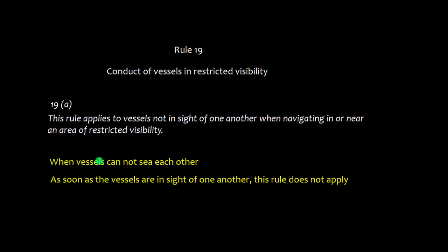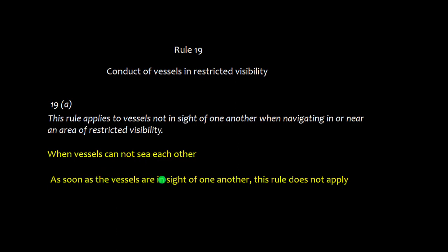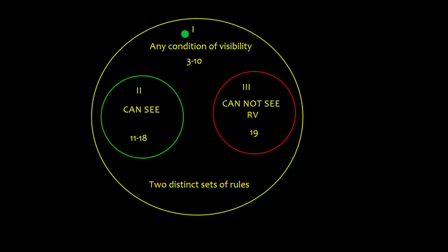This rule is applicable when vessels cannot see each other, and as soon as the vessels are in sight of one another, this rule will not apply. Section 1 covers rules 3 to 10 in any condition of visibility. Section 2, rules 11 to 18, applies when vessels can see each other. Section 3, rule 19, applies when you cannot see — in restricted visibility.